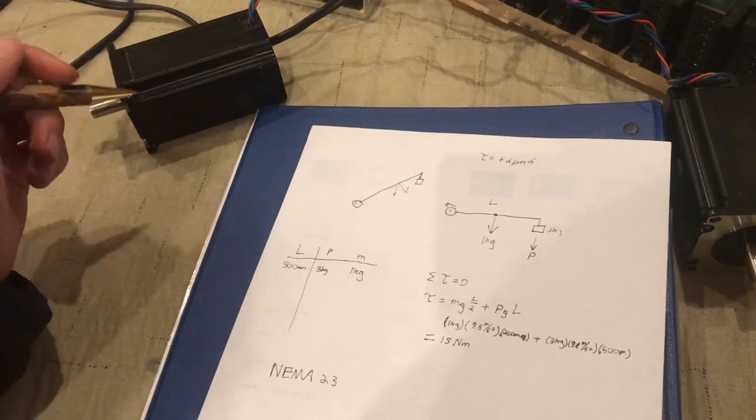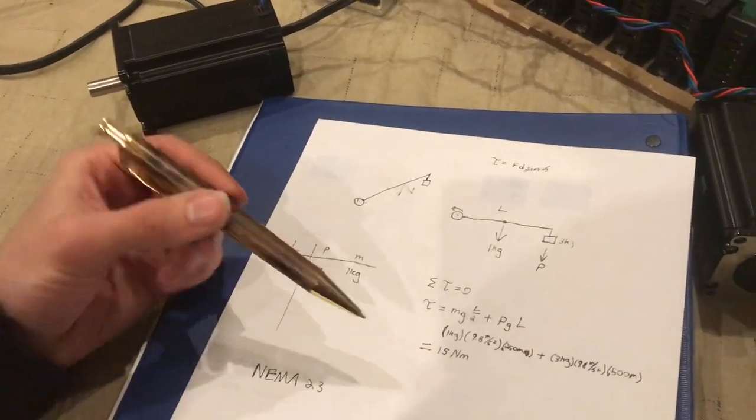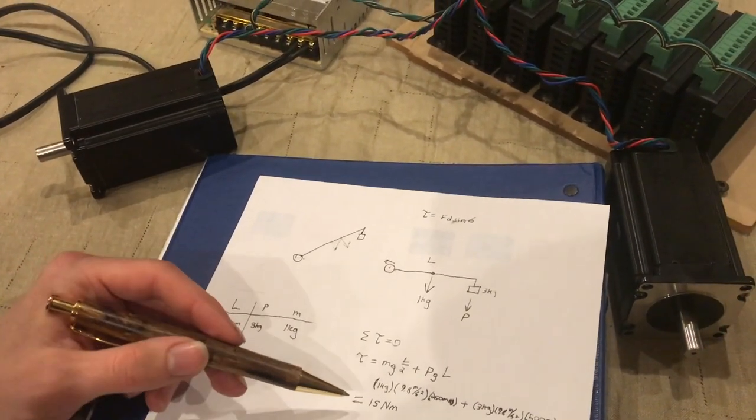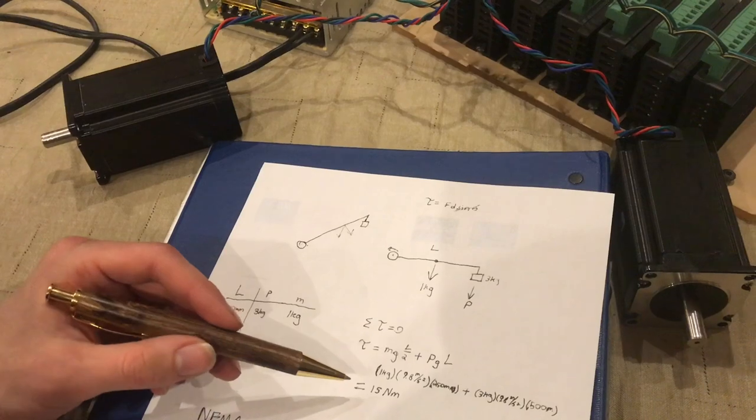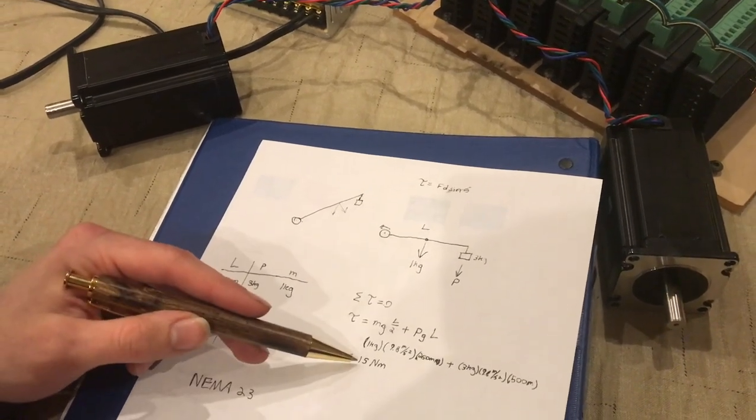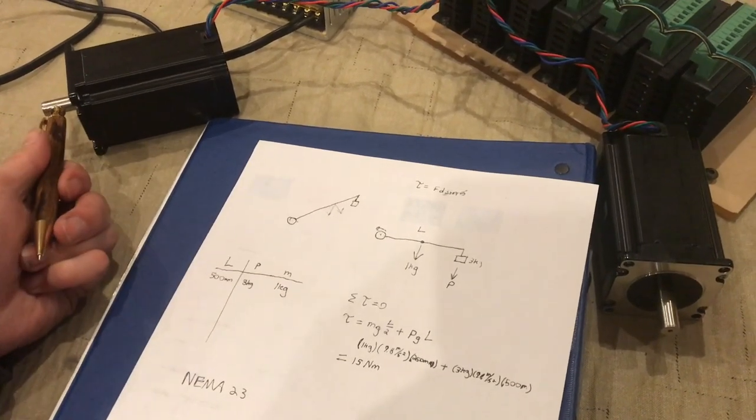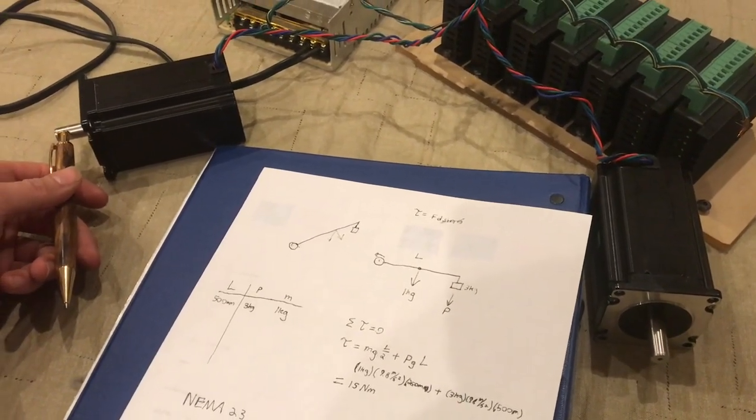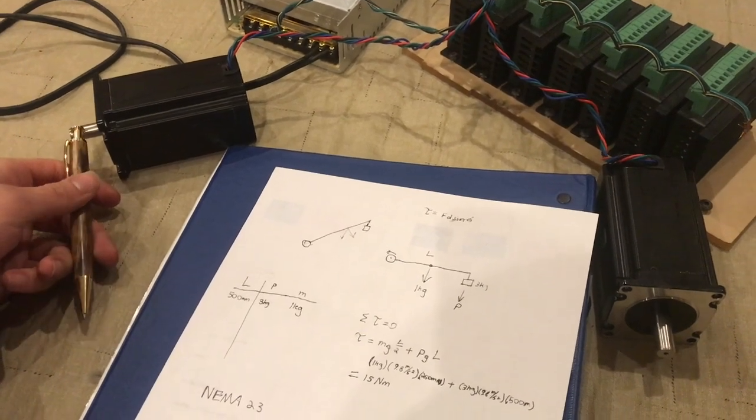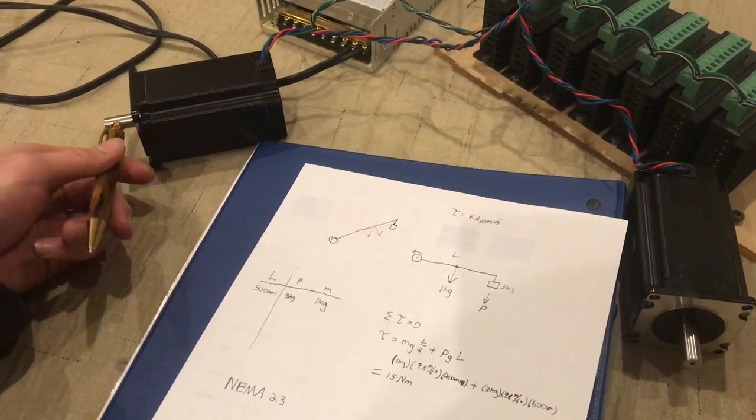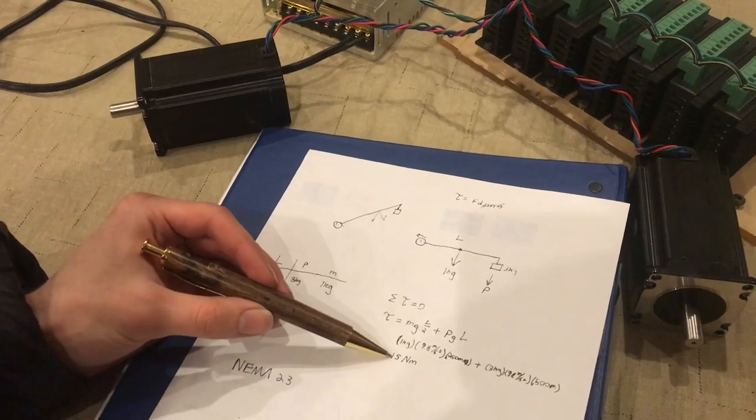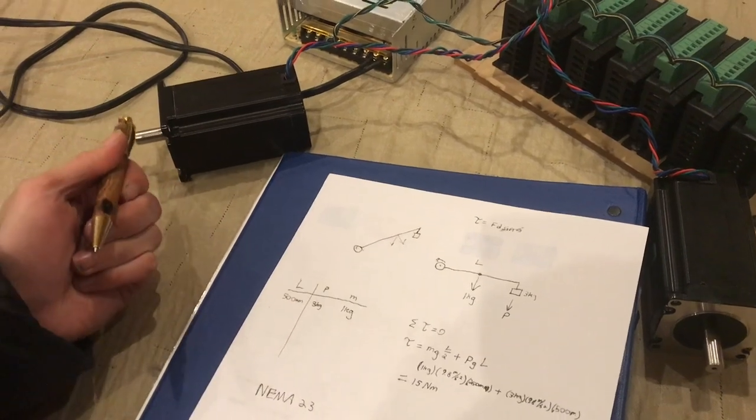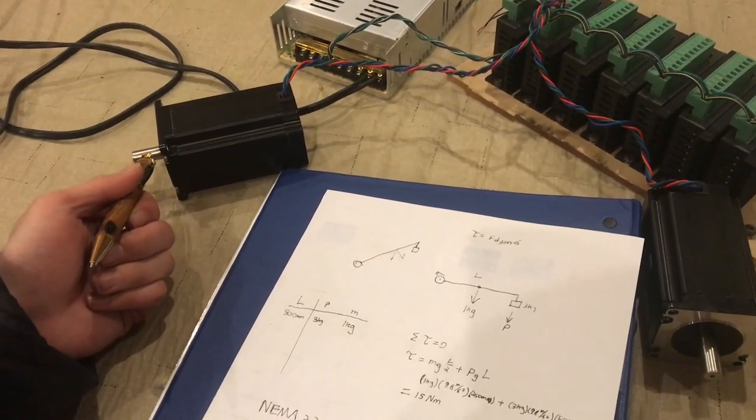So that would mean that we would need at least a five to one gearbox reduction to increase that three to fifteen. But even then the motor would just barely have enough torque to hold the arm straight out and keep it from falling. If we want to be able to lift the arm, we need to exceed 15 newton meters. So in that case you might go with the next step up of gearbox.